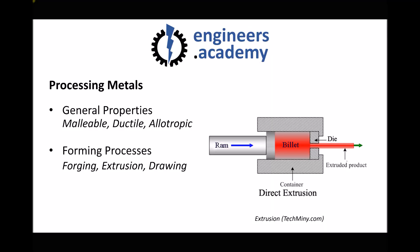In the previous video we looked at a number of different processes that can be used to form metals — in particular we looked at forging, extrusion and drawing. Now in order for these processes to be used it was reliant on the fact that the metal was malleable and ductile, so we can use forming processes on soft malleable ductile metals.